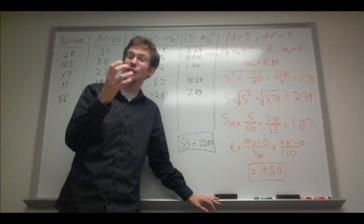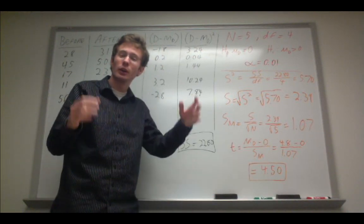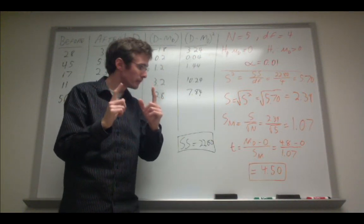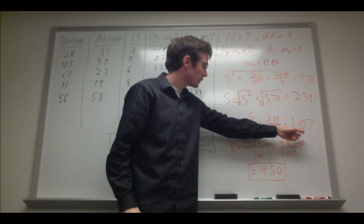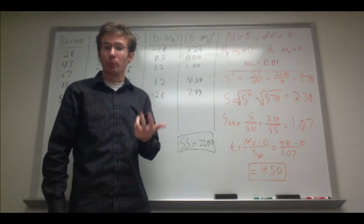All we do is we divide the estimated standard deviation by the square root of the number of subjects. So you should recall that as the number of subjects goes up, as n goes up, the standard error is going to get smaller. So in this case, my standard error is 1.07.